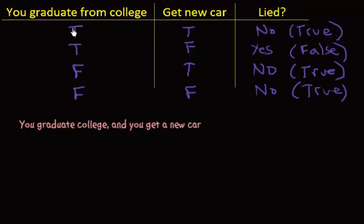So if you take a look at the first one, you graduate from college and you get a new car. And we said that that was a true statement. And that's what this sentence or statement down here represents, right? You graduate from college and you get a new car. So this represents this scenario, but remember that we already said that it was a true statement.